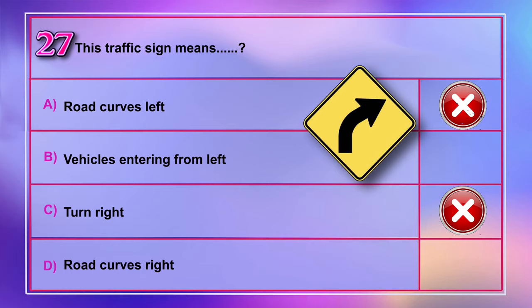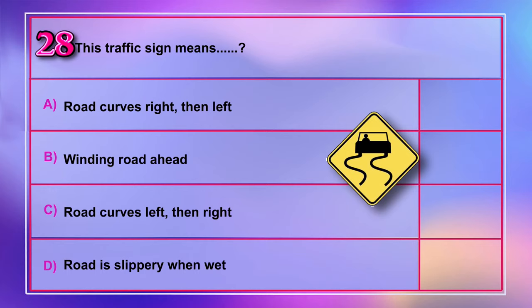Question number 28: This traffic sign means A) road curves right then left, B) winding road ahead, C) road curves left then right, D) road is slippery when wet.